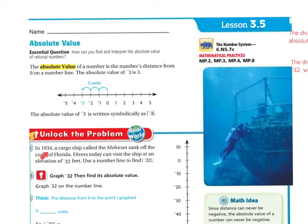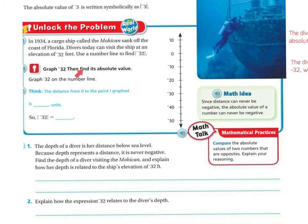Unlock the problem. In 1934, a cargo ship called the Mohican sank off the coast of Florida. Divers today can visit the ship at an elevation of negative 32 feet. Use the number line to find the absolute value of negative 32. If I'm going to graph negative 32 — there's 30, it's going to be right about here because that's 40 and 30. This is probably 35, so it's going to be closer to the 30. The distance from the 0 point that I graphed is 32 units, so the absolute value of negative 32 is 32.